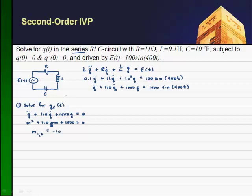I get negative 10 and a negative 100. So my QC of T will be C1e to the negative 10T plus C2e to the minus 100T. So this is just case one where we had two real roots to the characteristic equation. So here's our little complementary part. Let's go ahead and just box that off, because we're going to probably pull that in later when we put it together with the particular solution.